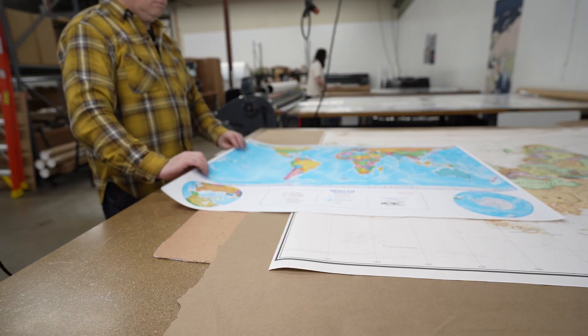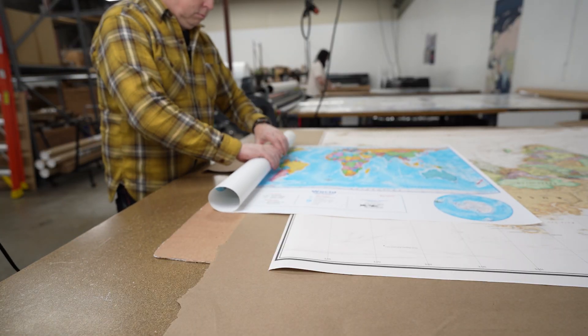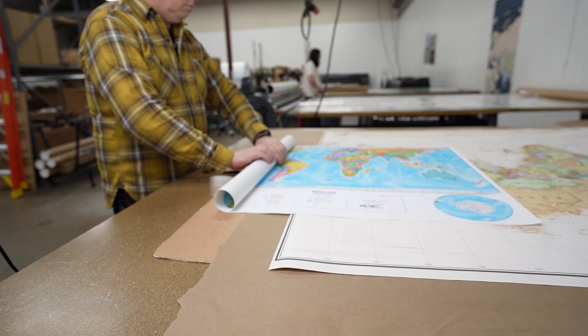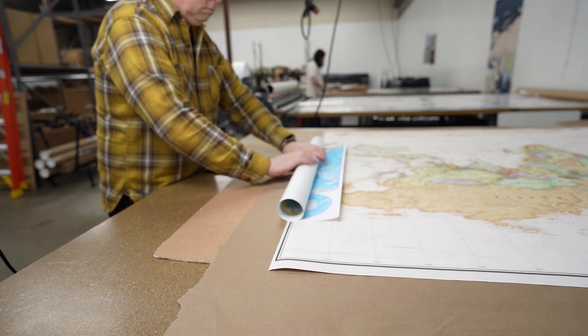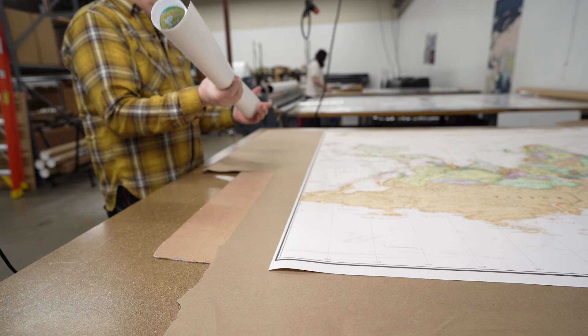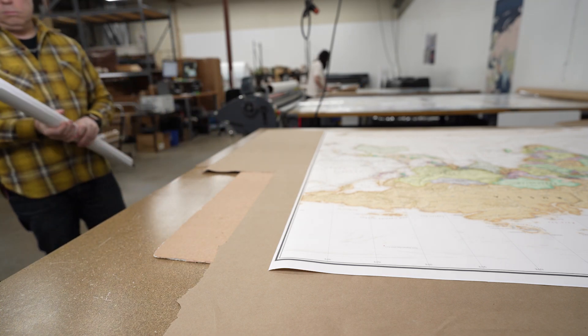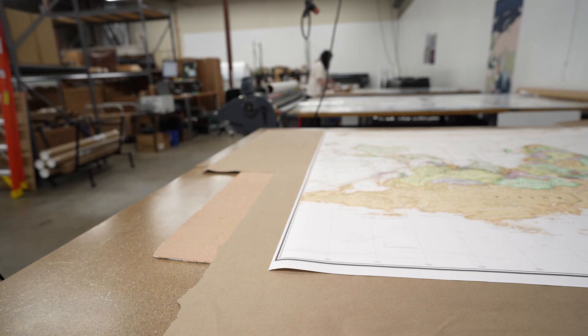But here's the problem. We stopped using paper charts for navigation decades ago. We have GPS now. We have satellites. We have digital maps that recalculate in real time. Yet this 450 year old sailor's tool is still the default way most people picture Earth. And I think that matters.